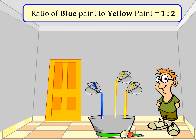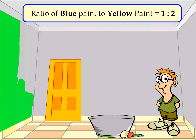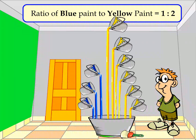He wanted to make sure he liked the shade before mixing more paint. He then started painting his room. Once he was sure he was happy with the effect produced, he decided to mix more paint. This time, he decided to use three buckets of blue paint.